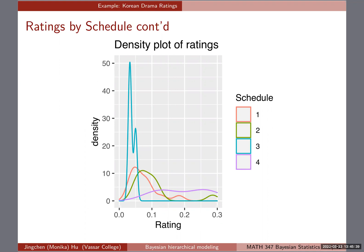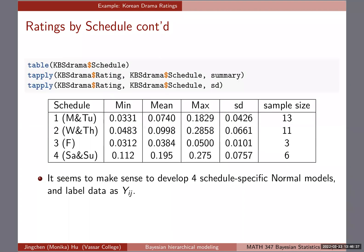A quick Google search from the chat reveals that Nielsen ratings go by percentage: if a program receives a Nielsen rating of 15, it means 15% of the public participating in the rating service watched that show. So the ratings are proportions of total viewers. Aiden followed up suggesting that the low Friday ratings may be because people are doing other things on Fridays.